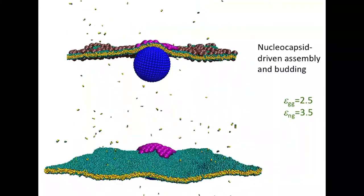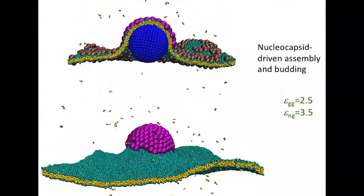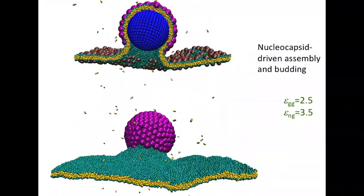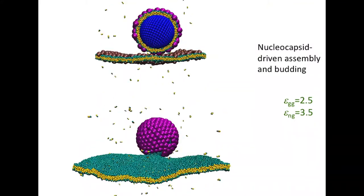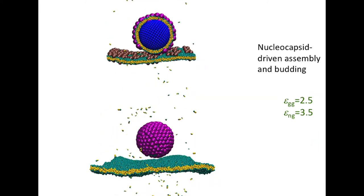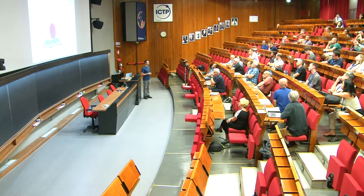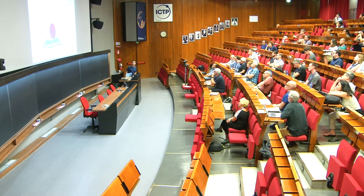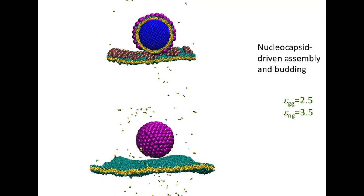Here I'm showing the same process with the nucleocapsid present, and there's actually very little visual difference. Once again assembly is fast at first, we develop inward curvature, and notably the proteins tend to be absent from the inwardly curved region — which is precisely why you get the dramatic slowdown at that point. Overall the process is very much the same with and without the nucleocapsid, though there are some differences I'll show shortly.